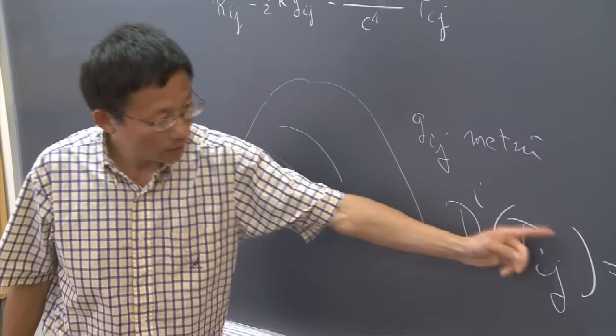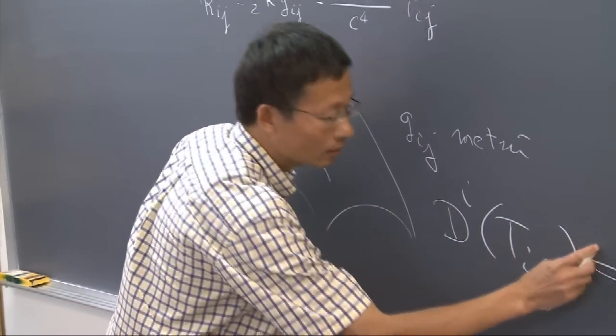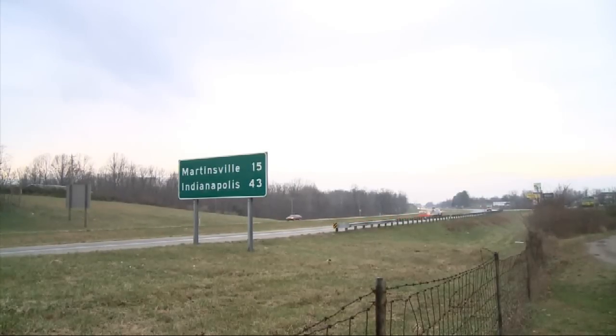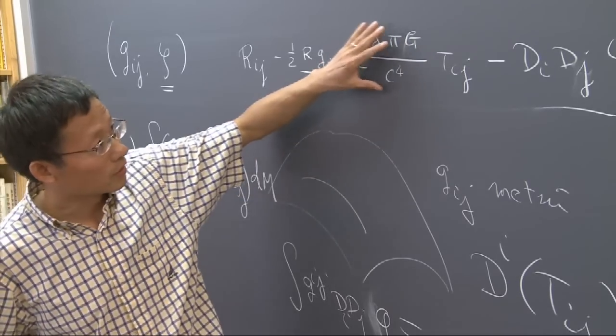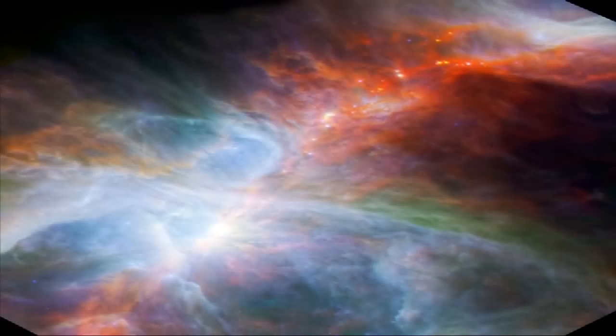That's a puzzler for physicists, because with a finite amount of energy, space shouldn't be flying apart at an increasing rate. It's like expecting a car to speed up with no gas left in the tank. But last year, Wang says three physicists won a Nobel Prize for discovering what's known as dark energy, an invisible fuel of sorts which may make space accelerate.